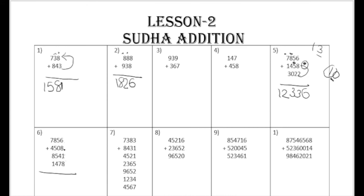It becomes 17, so we write sudha here and carry only 7. Then 7 plus 6 is 13. Write 3 here and write sudha here. Now count how many sudhas there are - 2. So 7 plus 4 is 11, plus 0 is 11, plus this sudha makes 12, and 12 plus 5 is 17, plus this sudha makes 18.